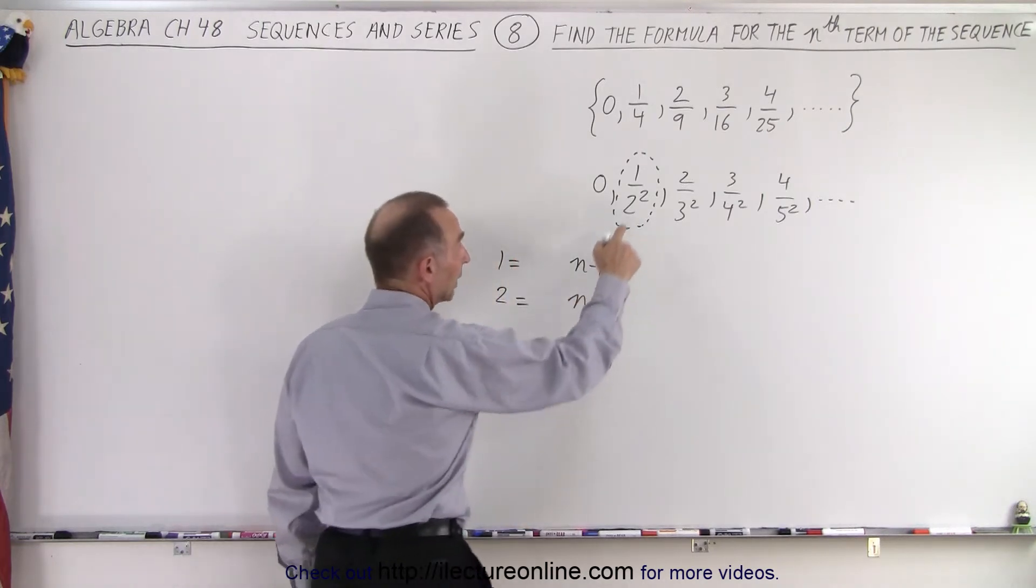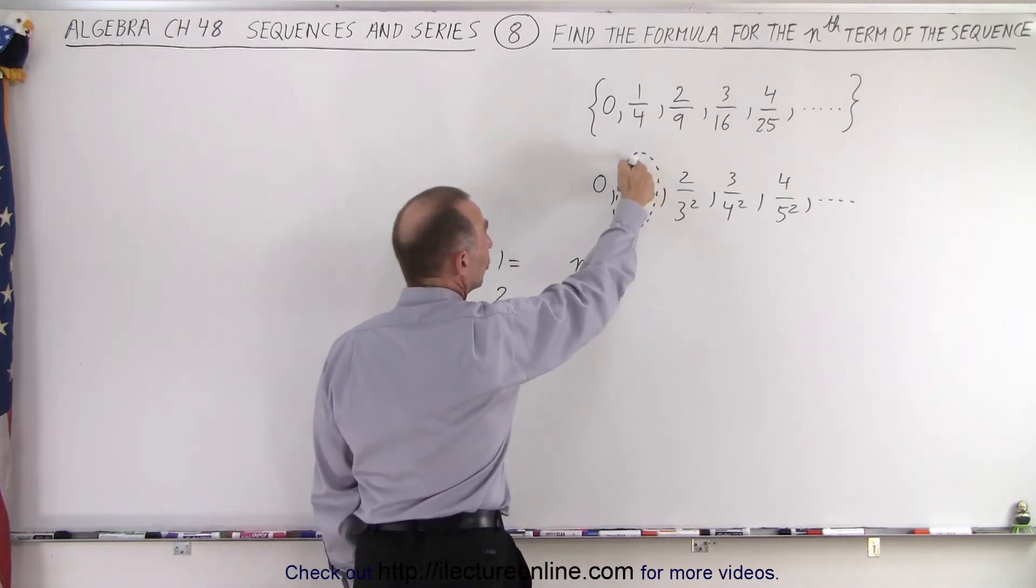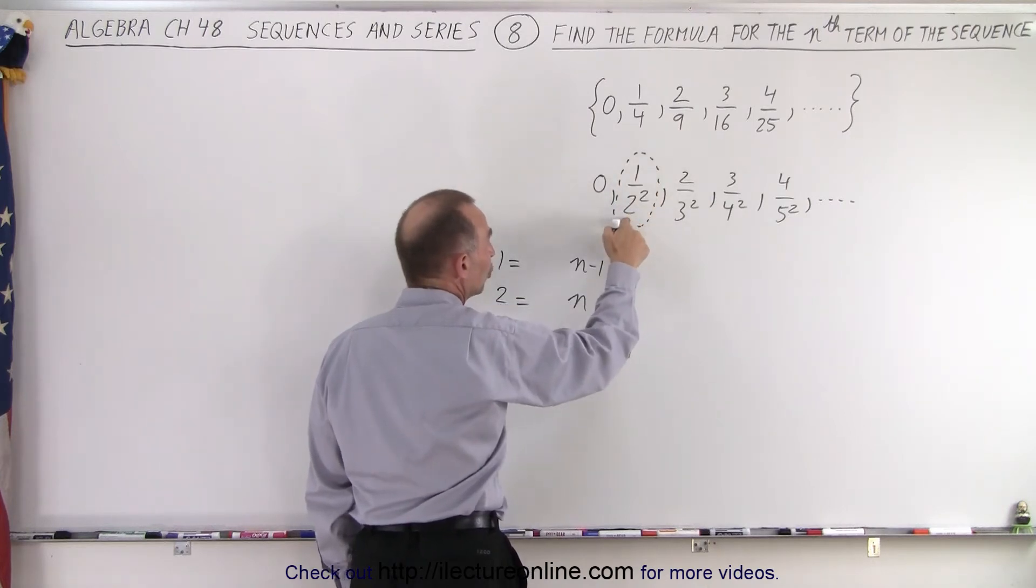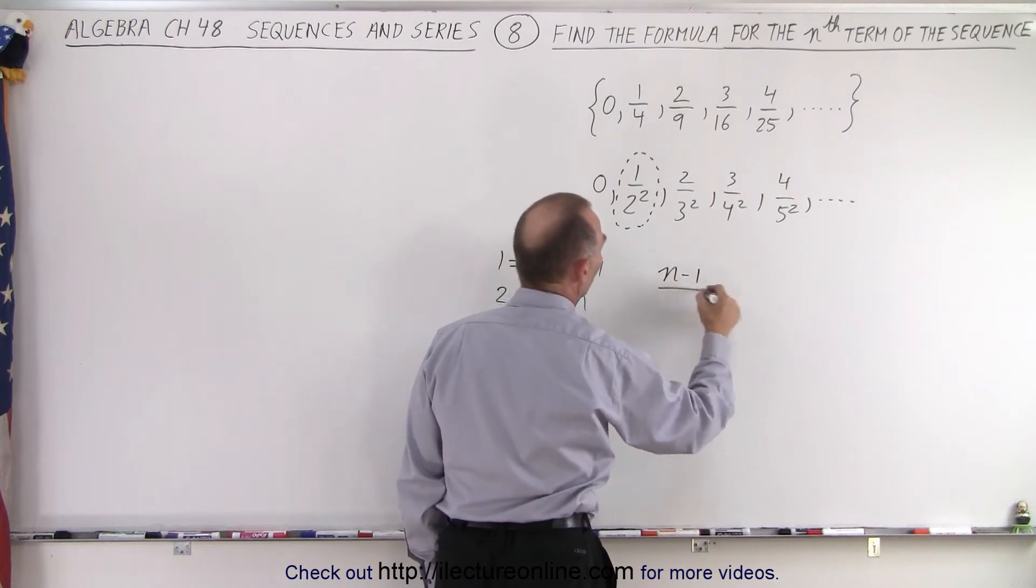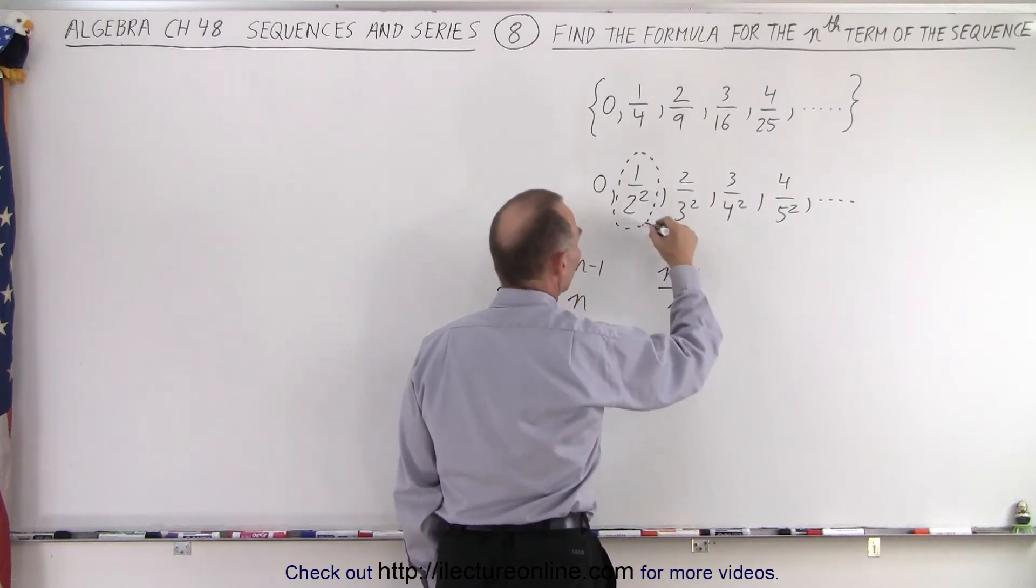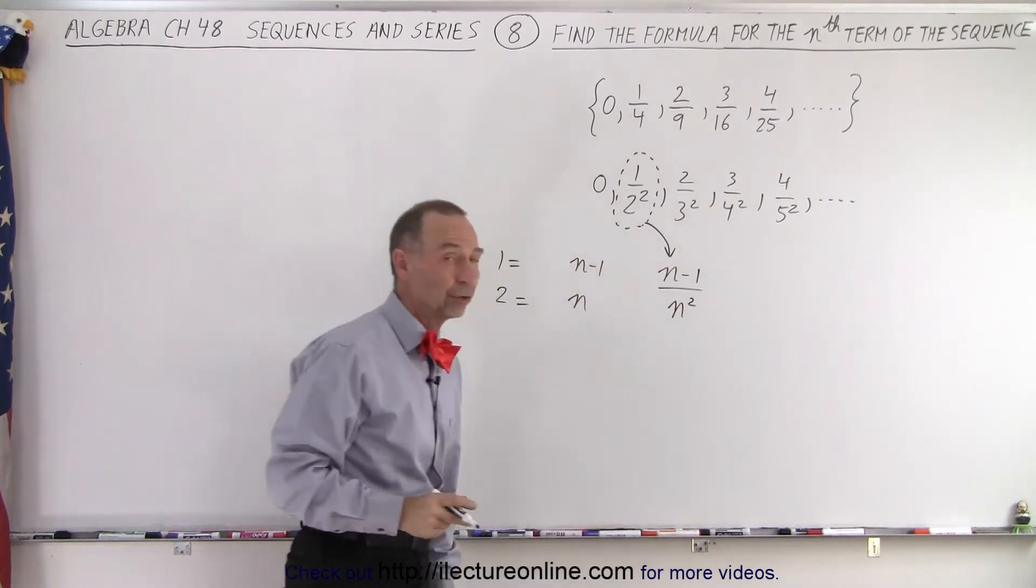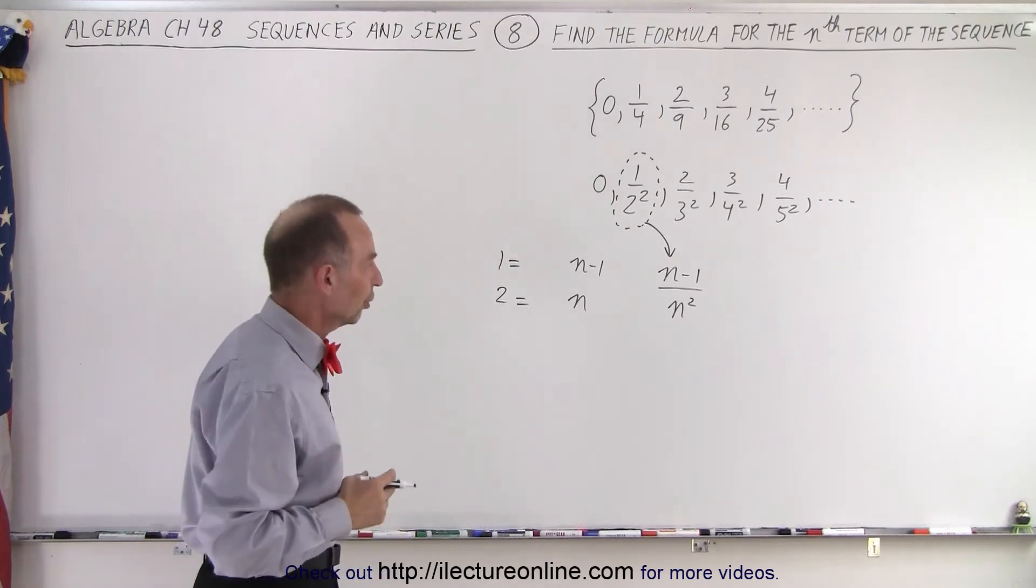And then if the denominator is squared, you can see that in the numerator we have N minus 1, in the denominator we have 2 squared, so this can be written as N minus 1 over N squared. Of course, that is appropriate for that second term. But does it hold for all the other terms?